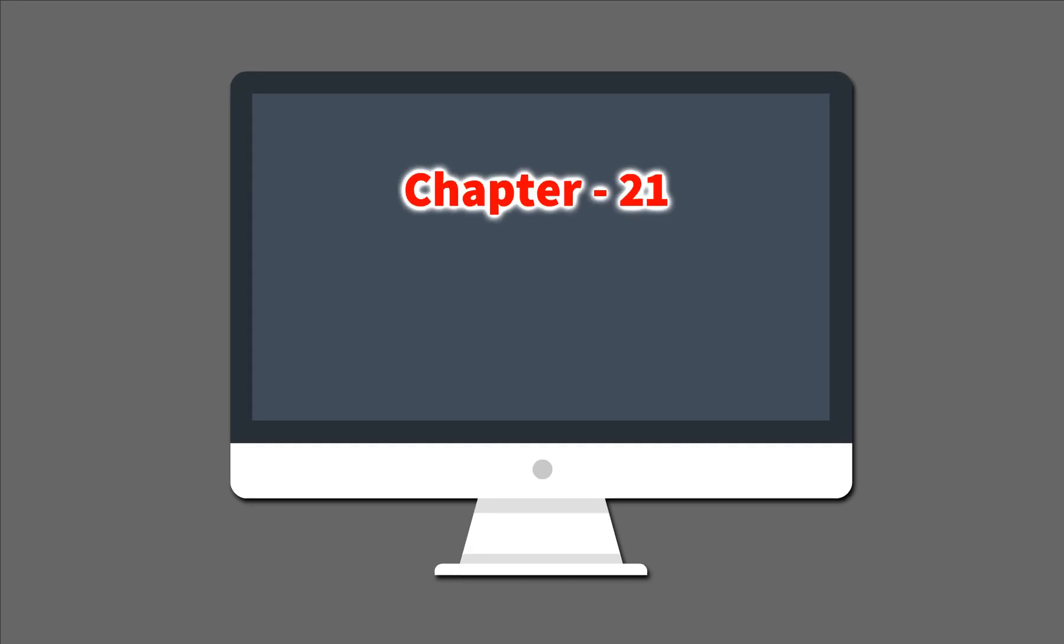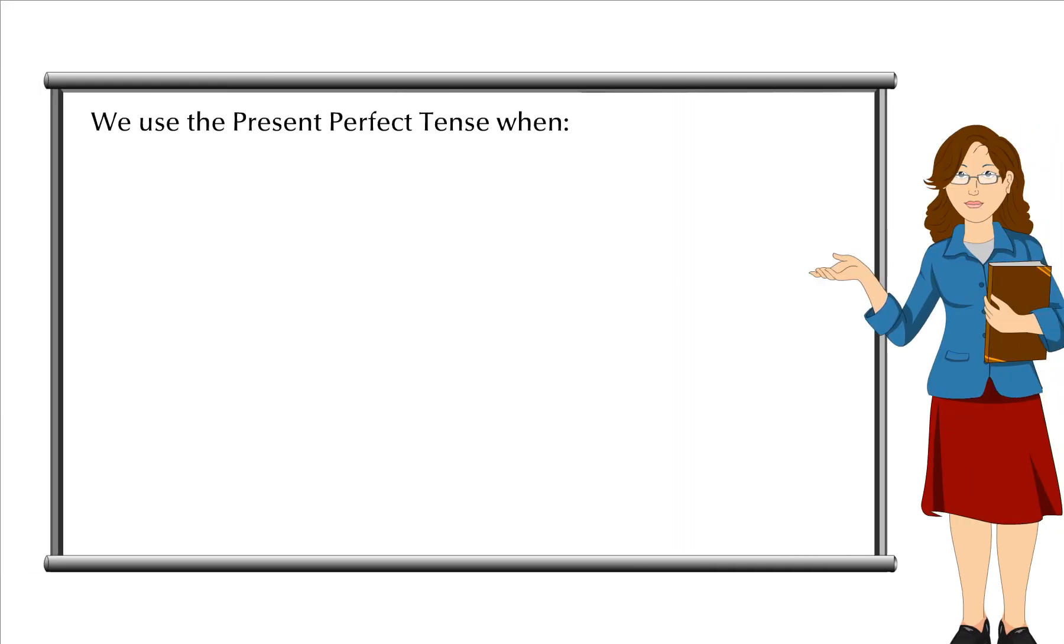Chapter 21 Present Perfect Tense. We use the present perfect tense when an unspecified point is in the past.